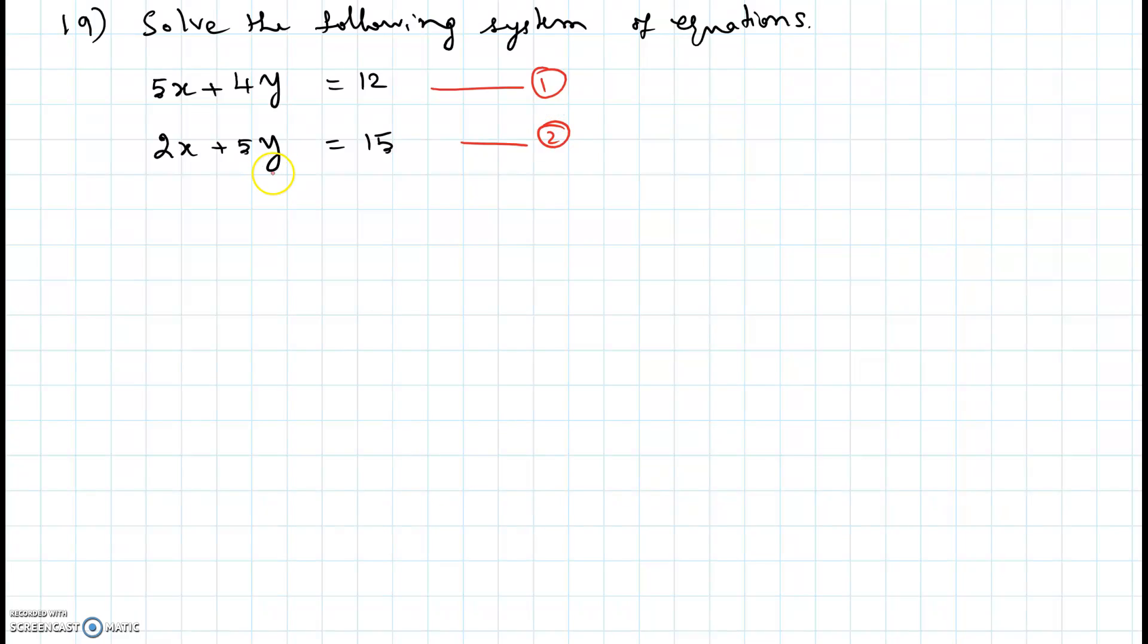We are going to do this problem by elimination or addition method. In this method we have to at a time eliminate one of the variables by making the coefficients of the variable equal and opposite.